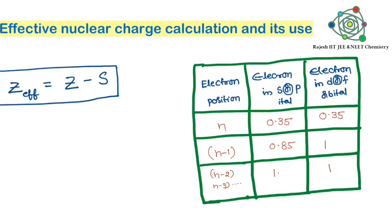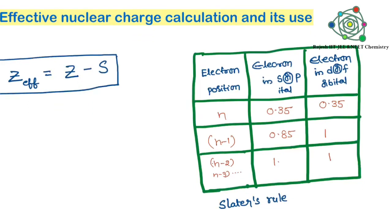How do we calculate this effective nuclear charge? The basic formula is: Z_effective = Z minus S, where S is the shielding effect. Inner electrons stop the attraction — that is simply called the shielding effect. This S value can be calculated using Slater's rule. With the help of this table you can calculate S.